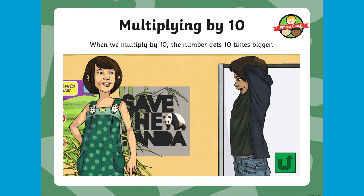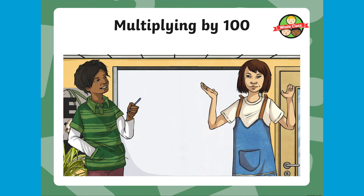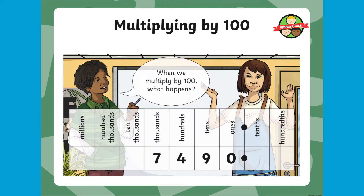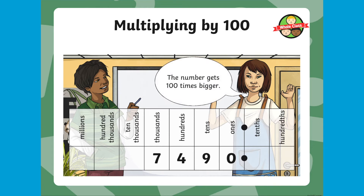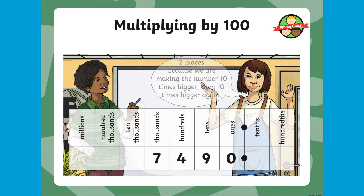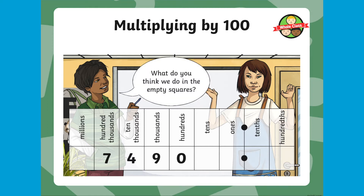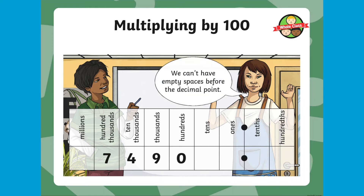This works almost exactly the same with multiplying by 100; however, we'll be moving our digits two spaces to the left. So 7,490 multiplied by 100 becomes 749,000, and we've put two zeros in the two leftover spaces as placeholders.